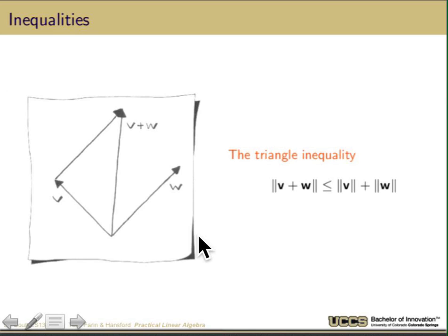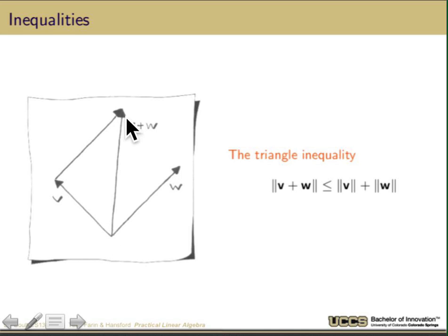A special case that many of you have seen is the triangle inequality: the magnitude of V plus W is less than or equal to the magnitude of V plus the magnitude of W. This is one of the fundamental properties we expect to hold in any Euclidean space.